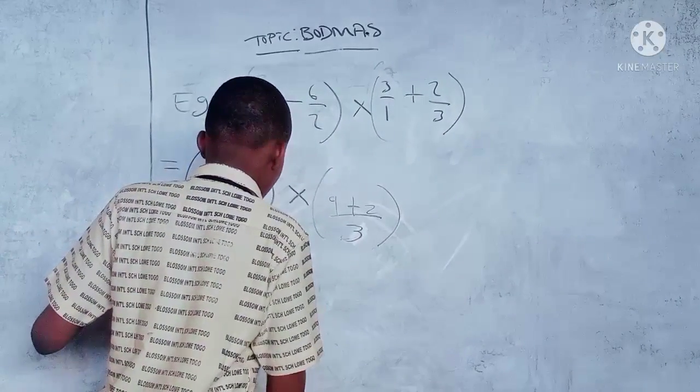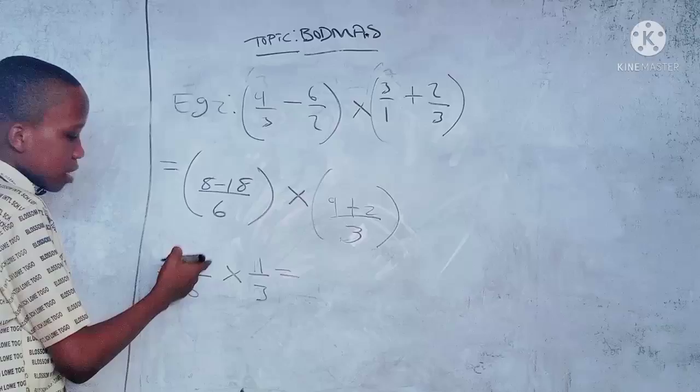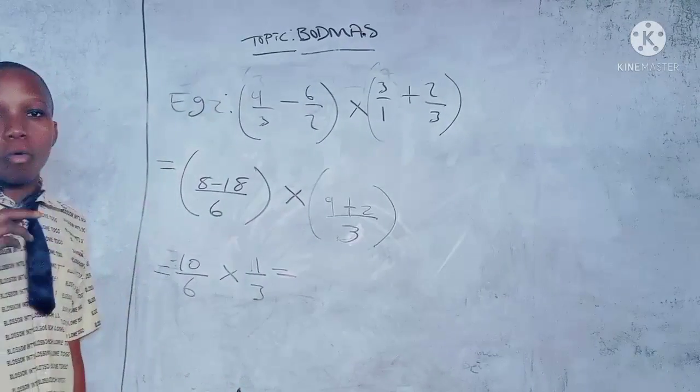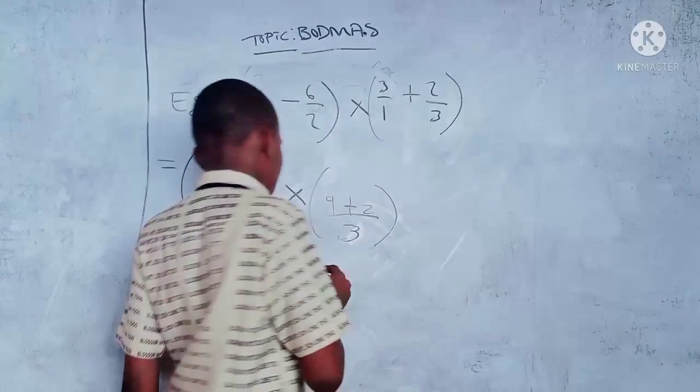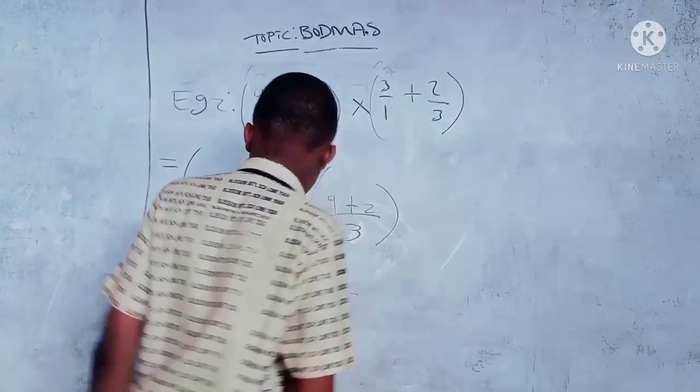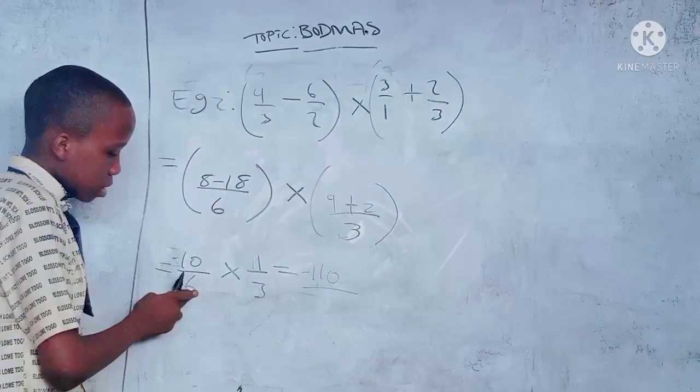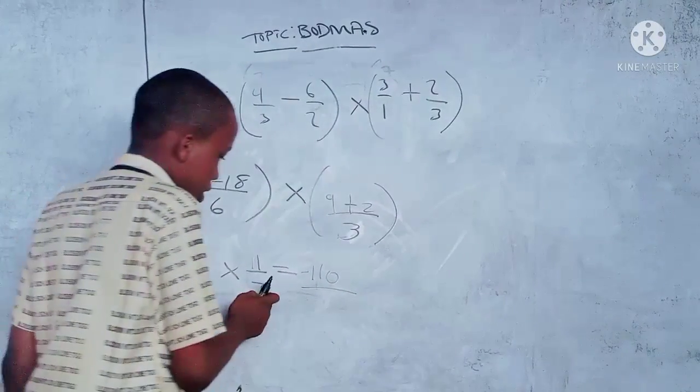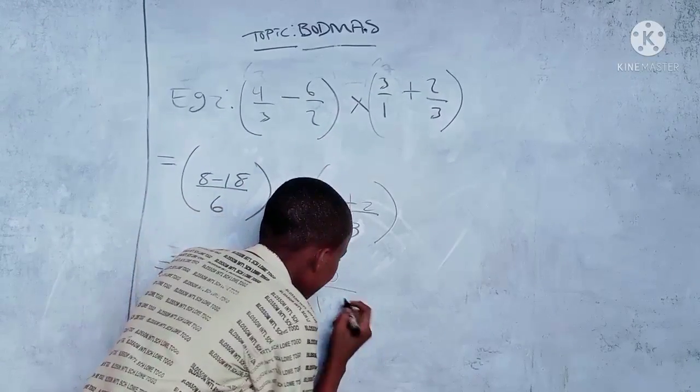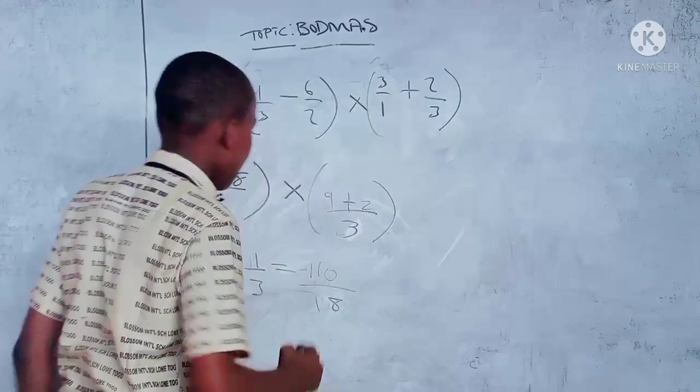Equals negative ten times eleven equals negative one hundred and ten over six times three equals eighteen.